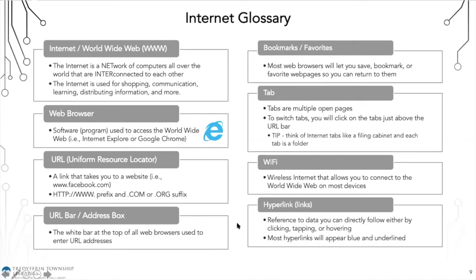People often confuse the URL bar with the Google search bar on the homepage. When you open a browser without a homepage set up, it'll automatically open to Google, which has a search bar. But the very top bar above that is your URL bar. If you have a specific website you want to navigate to, type it into that top bar. Bookmarks and favorites are a handy feature across all web browsers — they let you save webpages so you can return to them, and bypass having to type the URL each time.